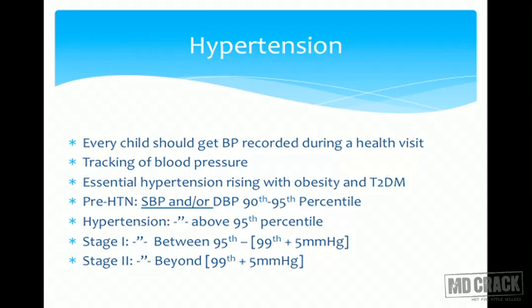Hypertension is divided into four stages. Pre-hypertension is when systolic and/or diastolic blood pressure is between the 90th and 95th percentile for age and sex. Hypertension is when blood pressure is above the 95th percentile. Stage one hypertension is when systolic or diastolic BP is between the 95th percentile and 99th percentile plus five millimeters of mercury. Stage two is when it is above that level.